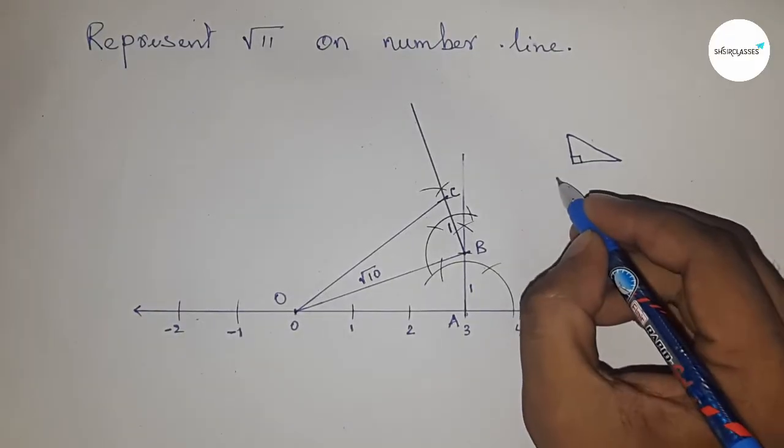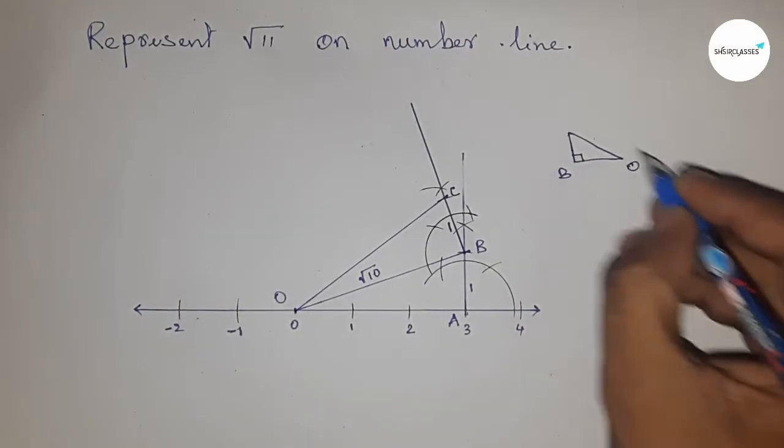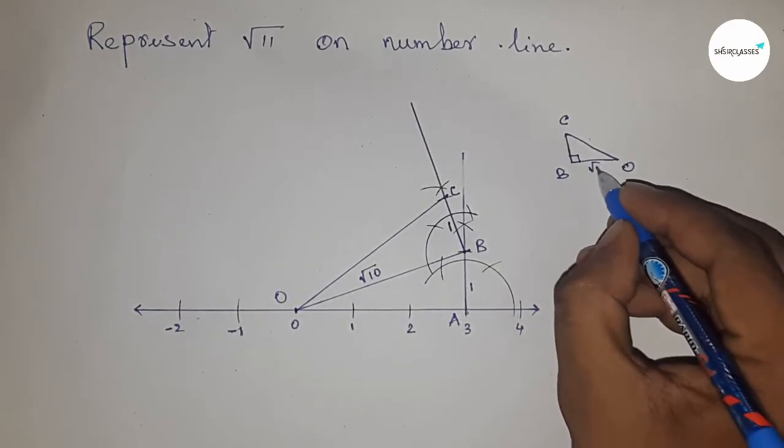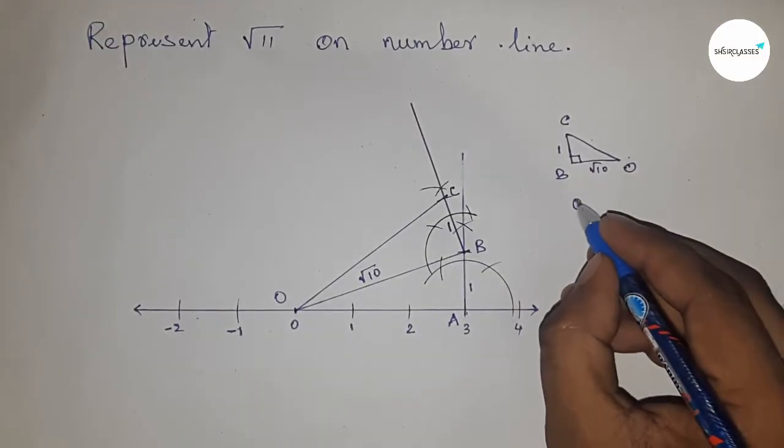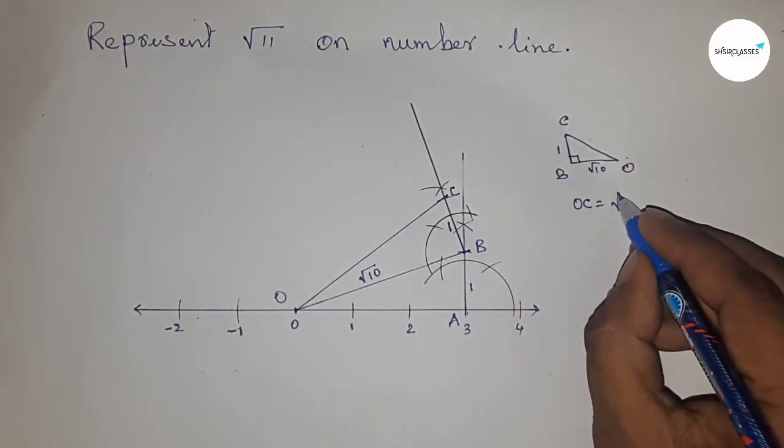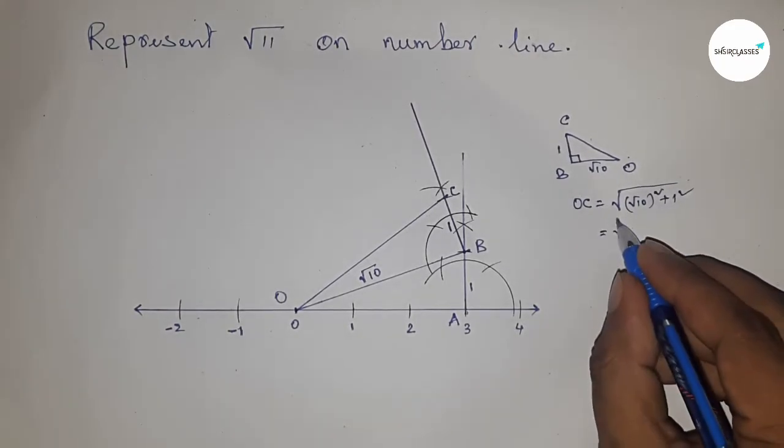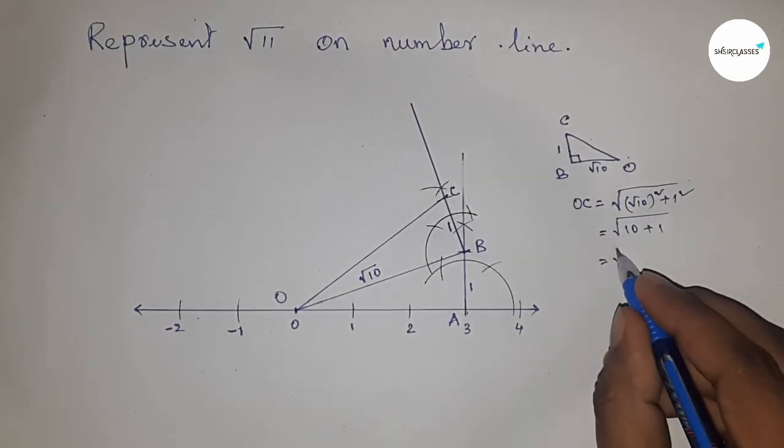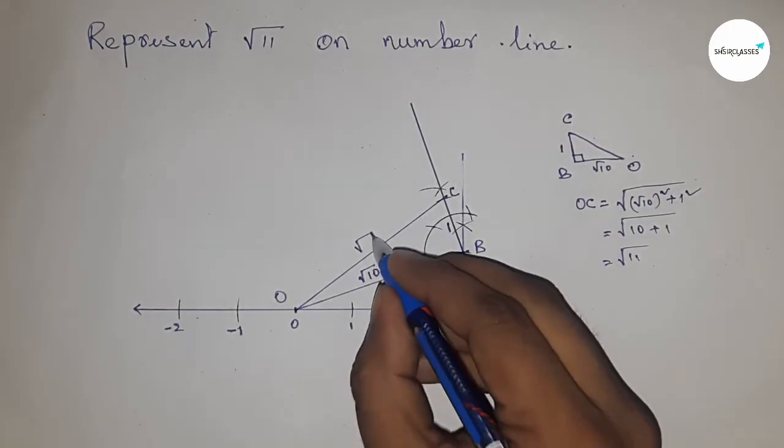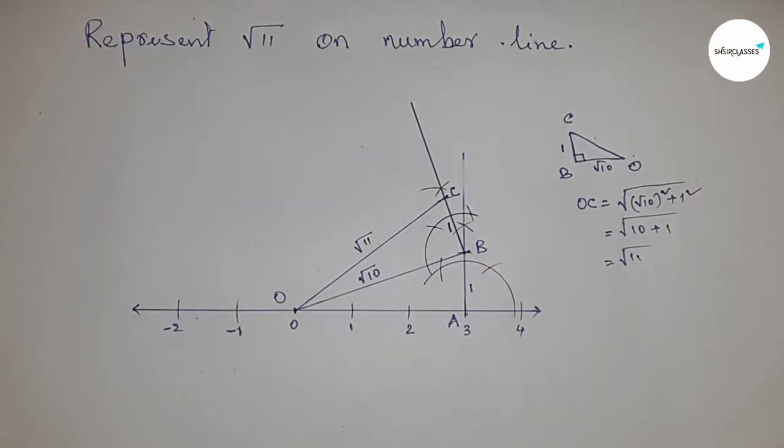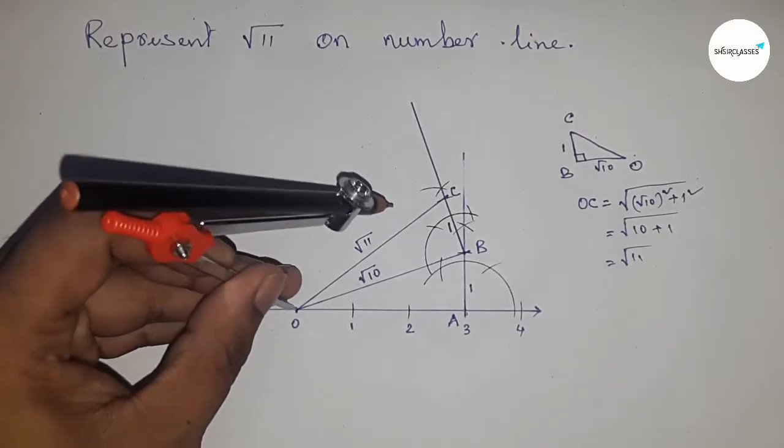Now talking about triangle OBC, using the Pythagorean theorem, the hypotenuse equals √(√10² + 1²) = √11. So this is √11. Now take the distance OC with the compass.